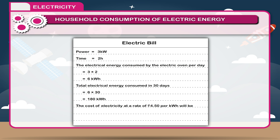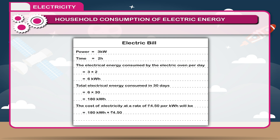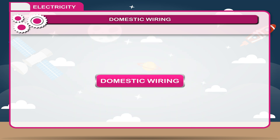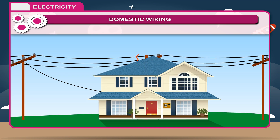If the cost of electricity is Rs. 4.5 per kWh, the total cost = 180 kWh × 4.5 rupees = 810 rupees. Domestic wiring: Electricity supplied to us for domestic purposes is 220 volts and AC.